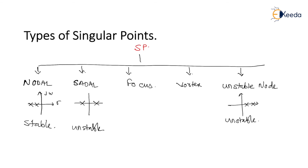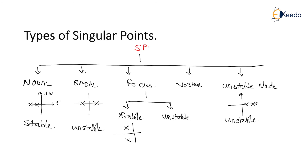Next is the focus point. Focus point is a singular point which is applicable for complex pole locations. I will classify this into two further categories: stable focus and unstable focus. For stable focus, the poles are on the LHS of the s-plane, which means complex conjugate pole locations with negative real part. For unstable focus, the singular points are on the RHS of the s-plane, and hence it is called as unstable focus point.